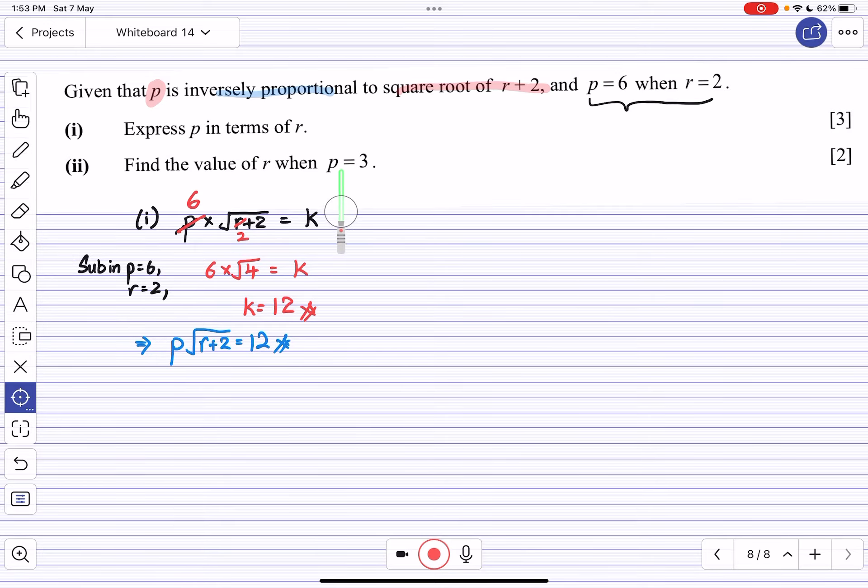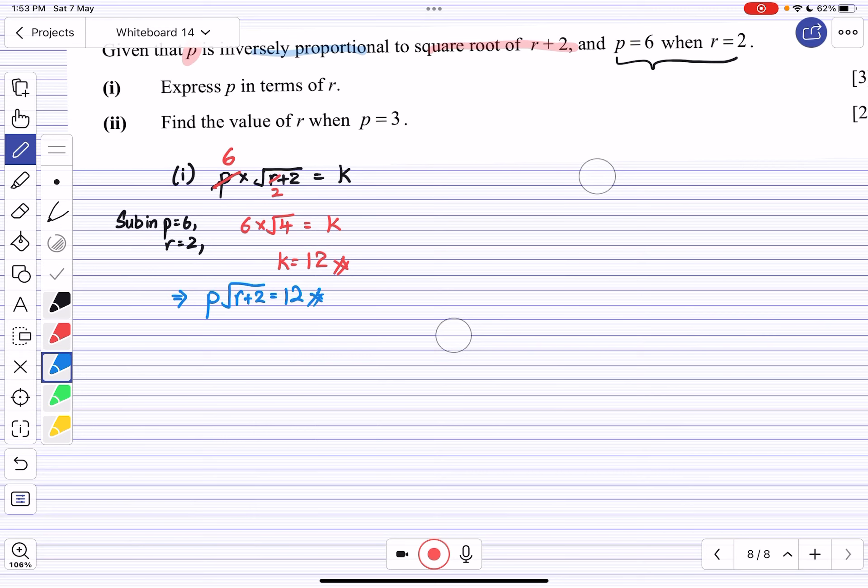To find the value of r when p equals 3, we substitute p equals 3. Dividing by 3 on both sides gives square root of r+2 equals 4. Squaring both sides, r+2 equals 16, and therefore r equals 14. That's all.